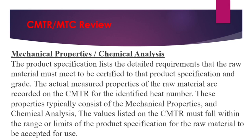The CMTR must mention the mechanical properties and chemical analysis. These must mention the code under which testing was done — what is the code requirement and what is the test result. The specified value (code requirement) and the test result (observation) must both be mentioned. The actual measured properties of the raw material are recorded on the CMTR for the identified heat number. The values listed on the CMTR must fall within the range or limit of the product specification for the raw material to be accepted for use.